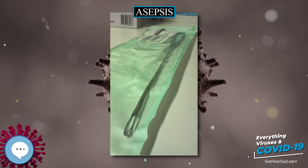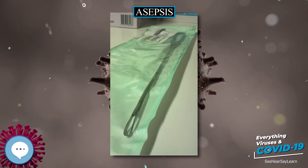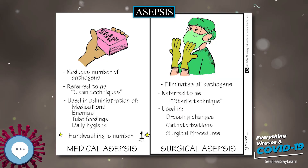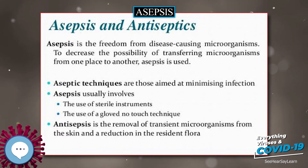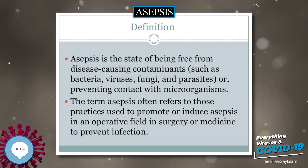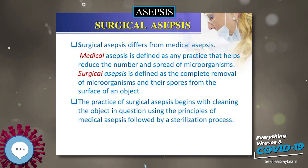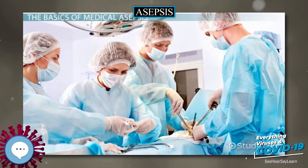The largest example of aseptic techniques is in hospital operating theaters, where the aim is to keep patients free from hospital microorganisms. There are two types of asepsis: medical and surgical. Medical or clean asepsis reduces the number of organisms and prevents their spread. Surgical or sterile asepsis includes procedures to eliminate microorganisms from an area, and is practiced by surgical technologists and nurses in operating theaters and treatment areas.